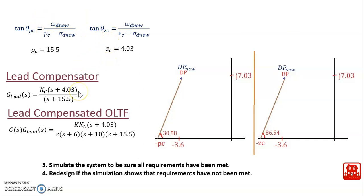This gives us the transfer function for the lead compensator. We then combine it with the uncompensated transfer function to get the lead compensated open loop transfer function. After this, using MATLAB, we simulate the system to verify all requirements have been met, and redesign if the simulation shows requirements have not been met.